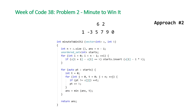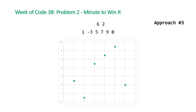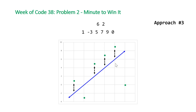Our third approach handles that missed case. Going back to our original example, there's something neat: if we add an arbitrary line with a slope equal to k to our graph, all of the elements in the optimal line will have the same distance to this arbitrary line. So we want to choose this arbitrary line and create a hash map where the key is the difference and the value is the count of the number of points in our array that have this difference to our line.